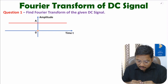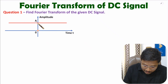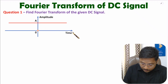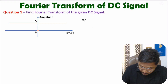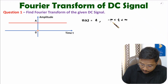You can observe here we have a DC signal and this DC signal is having magnitude A, and this magnitude is having a time limit ranging from minus infinity to plus infinity. So if you talk about signal X(t), then that is having magnitude A, where T is ranging from minus infinity to plus infinity.